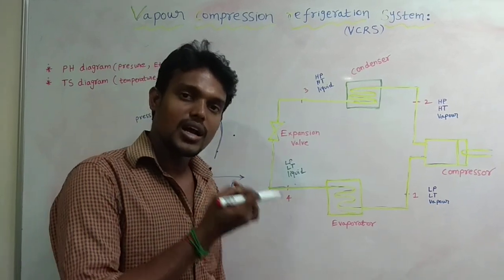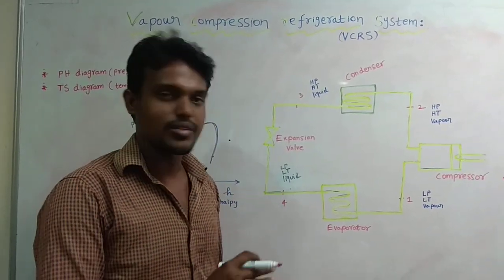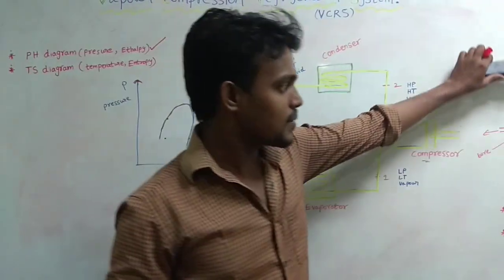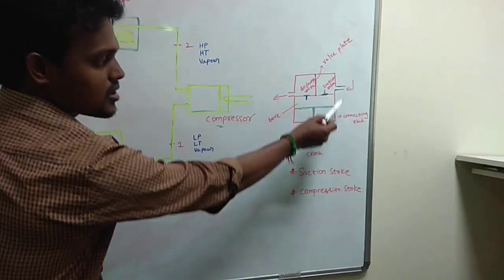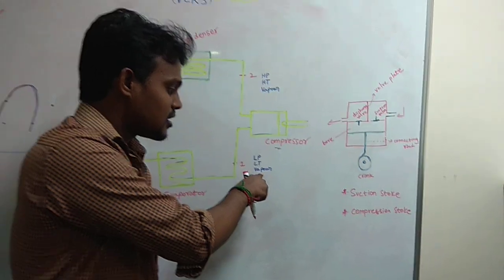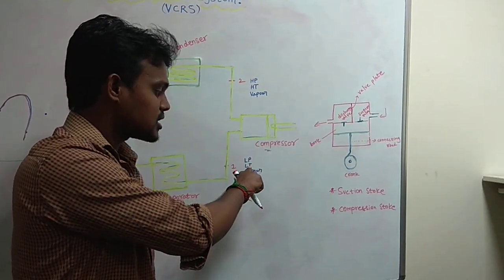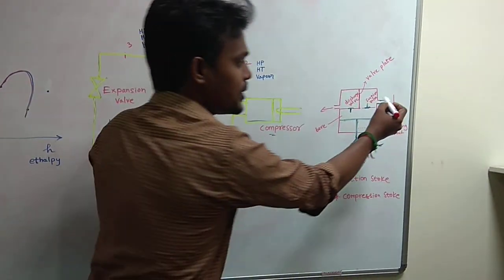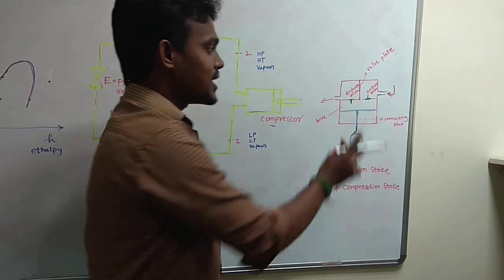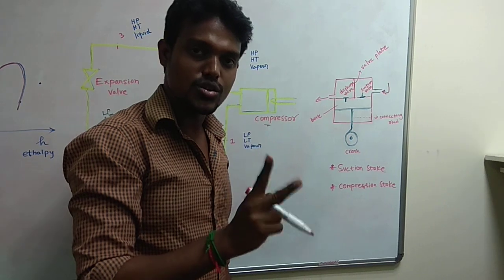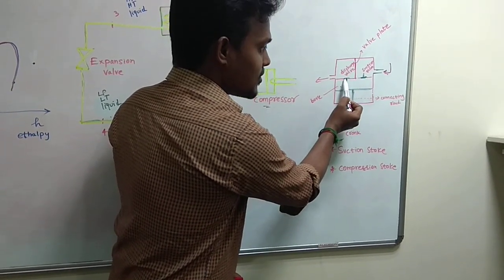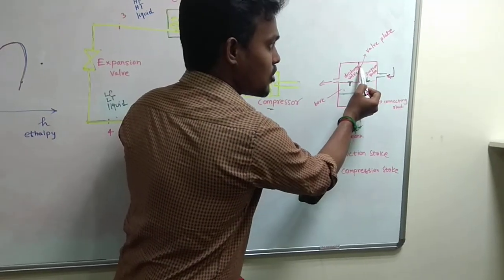The main components are: one compressor, two the condenser, and the expansion valve. Now let's look at the compressor. A small compressor has a suction stroke, crankshaft, connecting rod, cylinder bore, discharge valve, suction valve, and cylinder head.